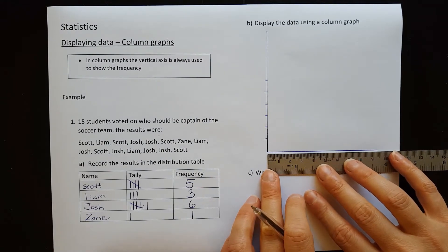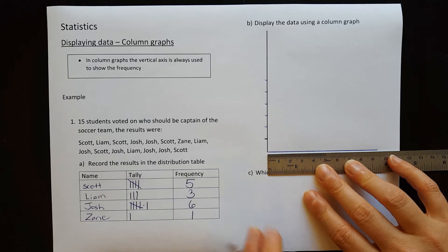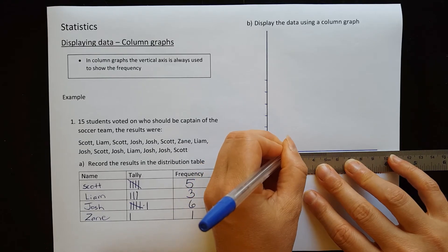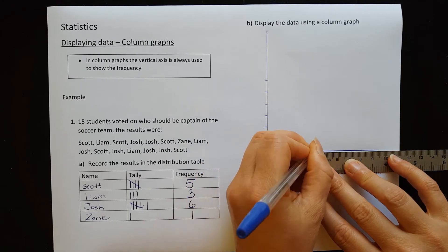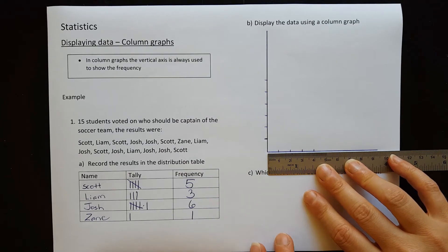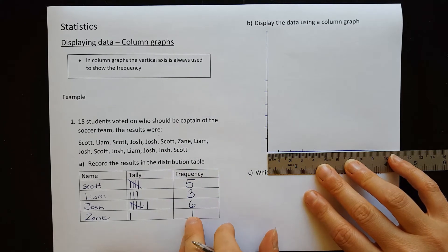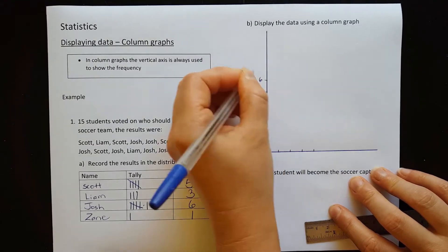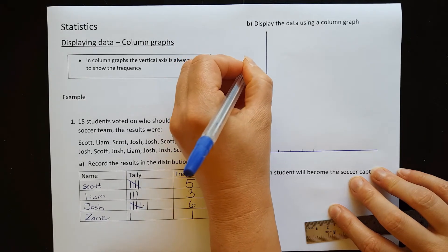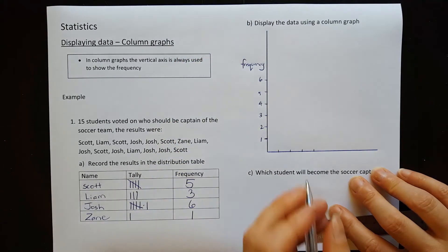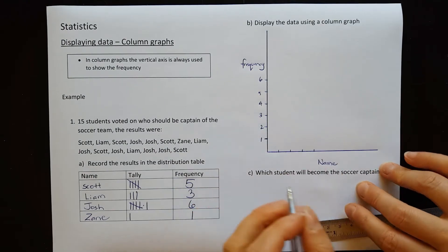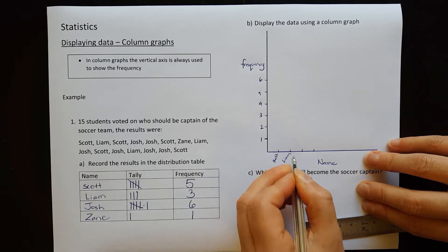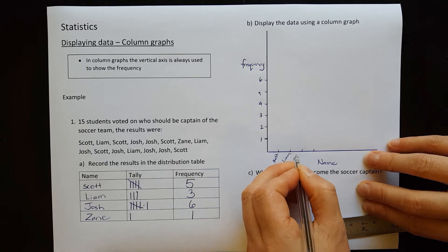Across the bottom, we're going to be putting the names. So Scott is the first name. We have only four names. So we just need four little lines down there. So let's just put some numbers on here. That was our frequency and down the bottom is the name. So we have Scott, Liam, Josh, and Zane.